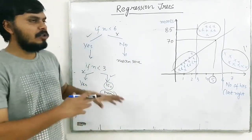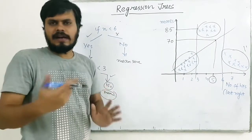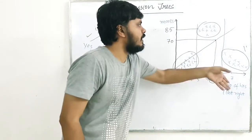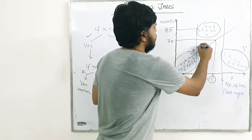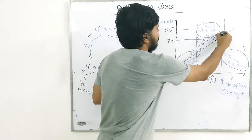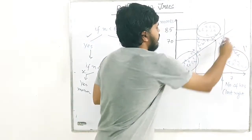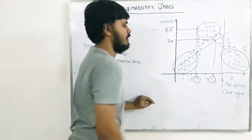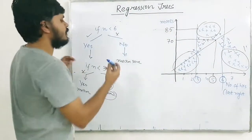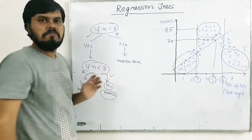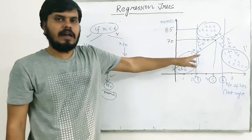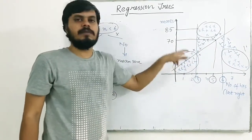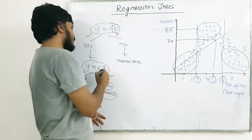Now I've explained this in a simple way, but there's a conceptual question. I made cuts at 3 and 6. But what if your data is completely continuous? How does the algorithm figure out those numbers — 3 or 6? As a human I can see the graph and tell where to split, but how does the algorithm figure out this number? That is the main problem — figuring out these threshold values.